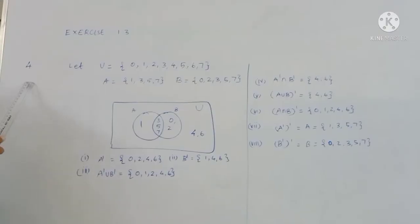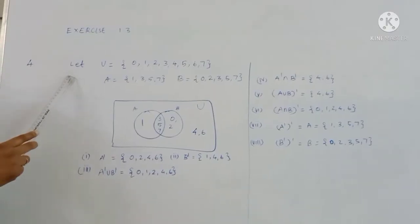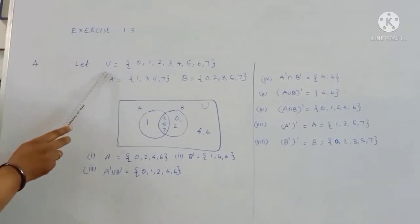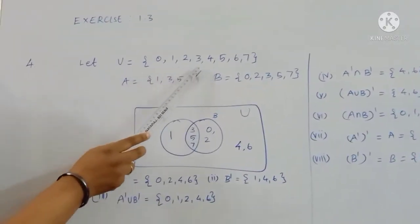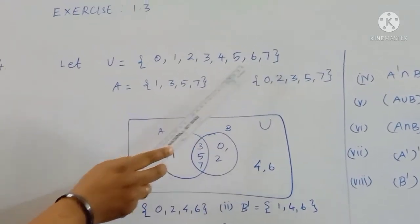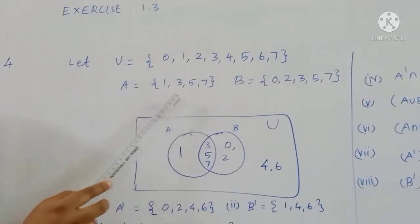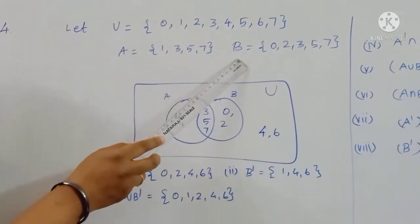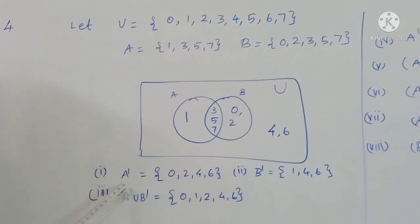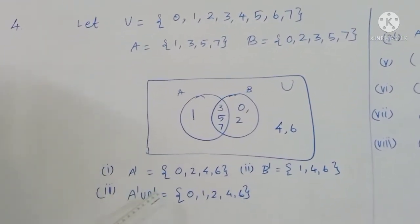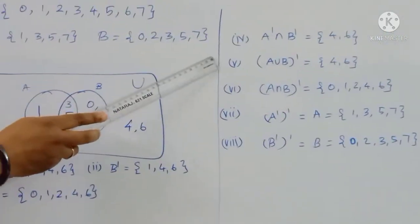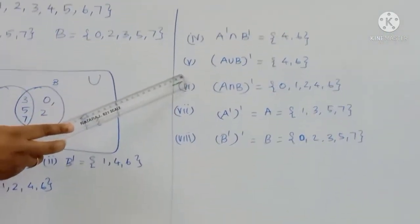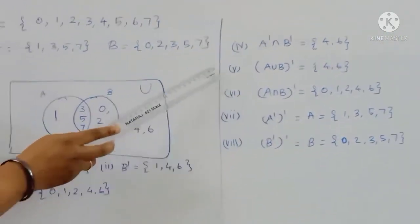For the fourth sum, let the universal set be {0, 1, 2, 3, 4, 5, 6, 7}. We need to find A prime, B prime, A intersection B, A union B prime, and A union B whole dash.